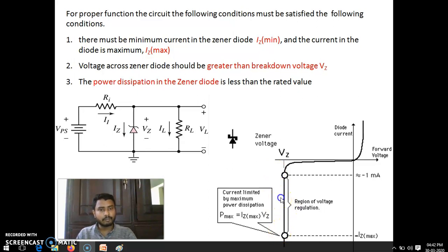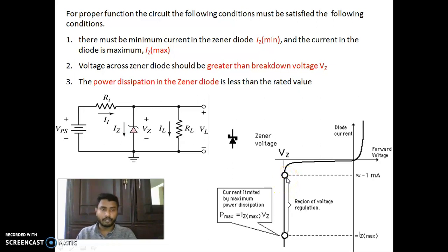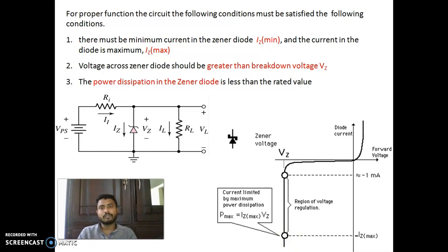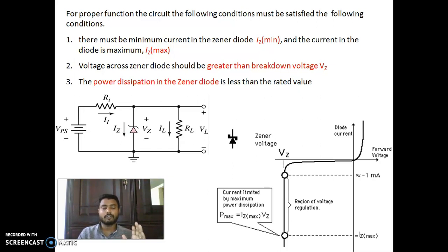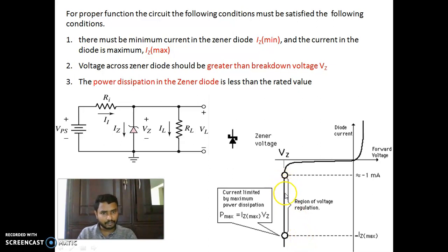If the current is less than IZ minimum, the diode will not operate as a voltage regulator — that minimum is 1 milliampere. And if the current goes beyond IZ maximum, the Zener diode may get damaged, because there is a maximum value of current that can pass through the diode. Beyond that value, damage occurs — this applies to each and every component. So the current flowing through the Zener diode should be between IZ minimum and IZ maximum, which is the linear region of the diode.